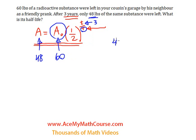So here we go. We have 48 equals 60 times one-half to the power of 3 over big T, the half-life. And of course we want to solve for the big T.